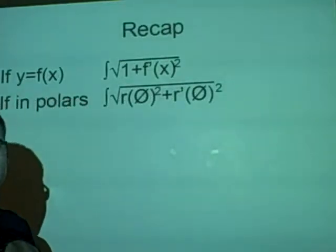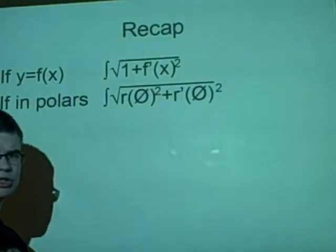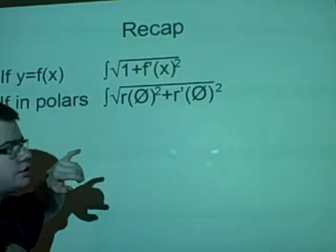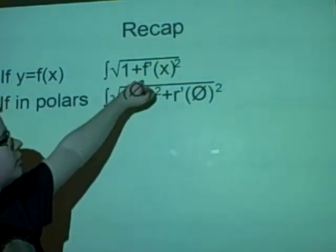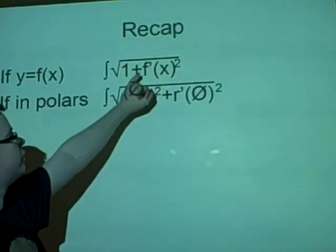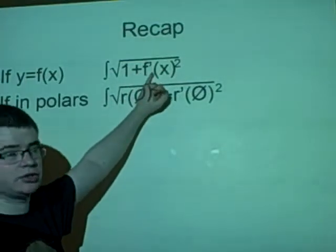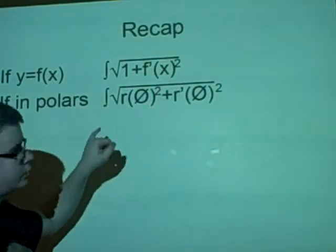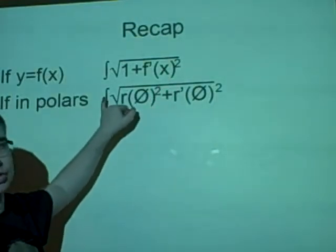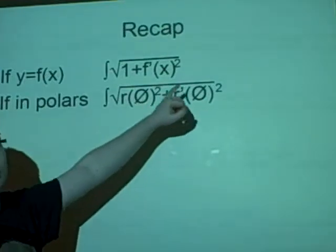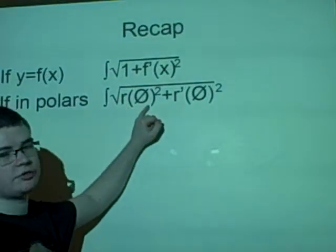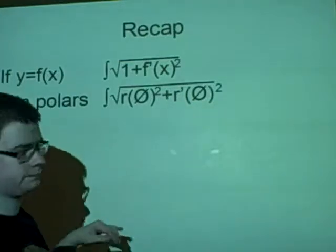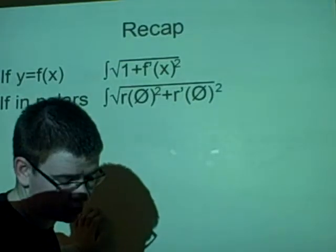Right, we had a quick recap. Now this is, as you should remember, the arc length. If we have it in Cartesian, we have the integral of the square root of 1 plus f'(x) squared. And if we have it in polars, we have the integral of the square root of r(θ)² plus r'(θ)². That was just a quick recap at the beginning.